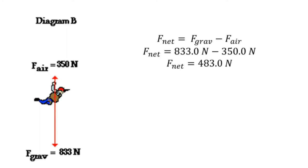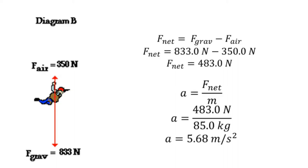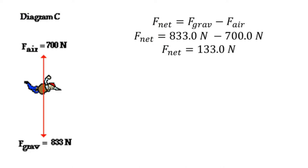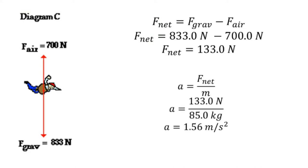To solve for acceleration, we substitute our given mass and the obtained net force value, and get an acceleration of 5.68 meters per square second. Notice how the air resistance decreased the acceleration of our diver from 9.8 to 5.68. For diagram C, the air resistance force is increased to 700 newtons, giving a total net force of 133 newtons. The acceleration of the diver has now decreased to 1.56 meters per square second — a lot slower than the acceleration in diagram B.